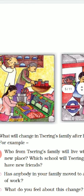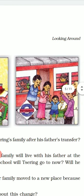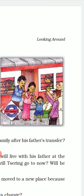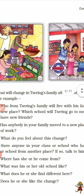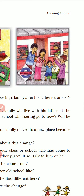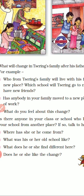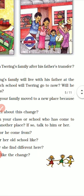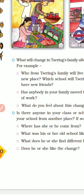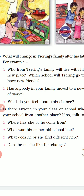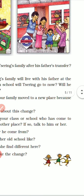You can see here all of them packing things up because they have to move. Then they are moving to the station to go to another place. Now we can see what will change in Zering's family after his father's transfer. For example: Who from Zering's family will live with his father at the new place? Which school will Zering go to now? Will he have new friends? Has anyone in your family moved to a new place because of work? What do you feel about this change? Is there anyone in your class or school who has come from another place? If so, talk to him or her.